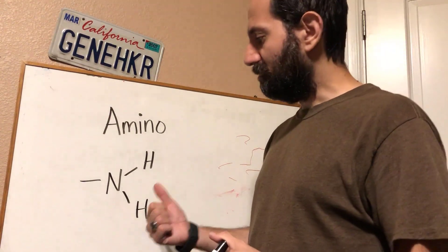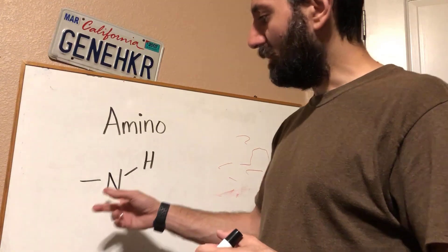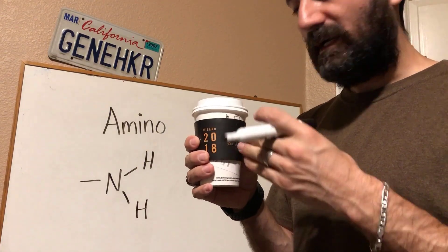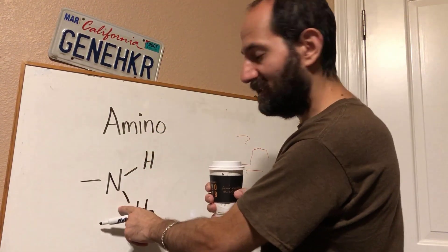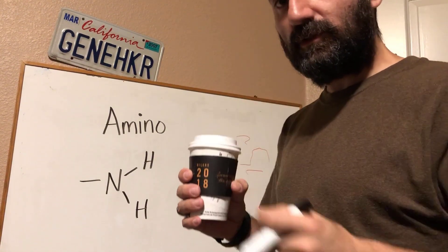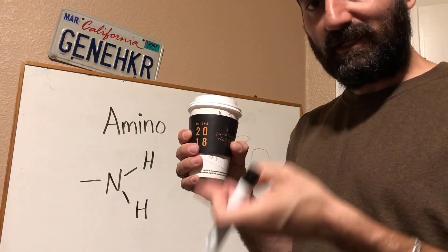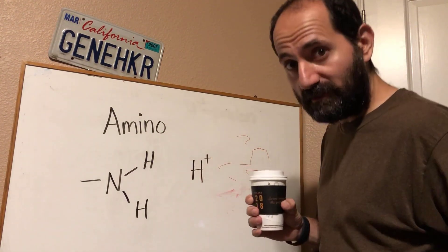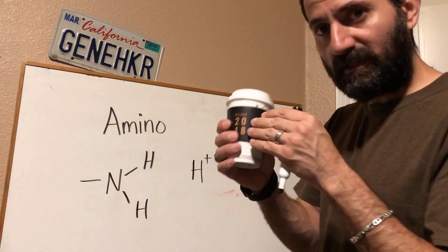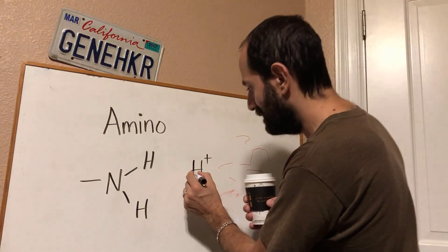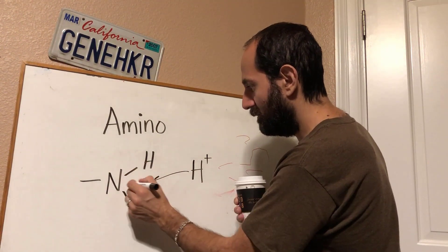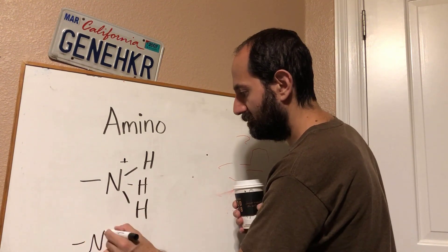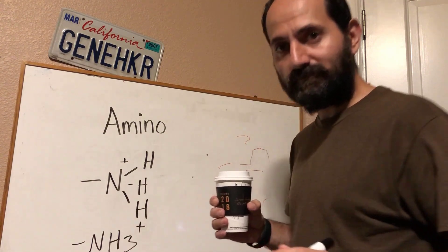The reason it's considered a basic functional group is because if a molecule has an amino group and you place that molecule in a solution — let's say I have my coffee here and I place the molecule that has an amino group into my coffee — what it'll do is it'll find a proton floating around. A proton is H+. It will find a proton from my coffee and it'll sequester it, it will grab it, and this will become NH3+.